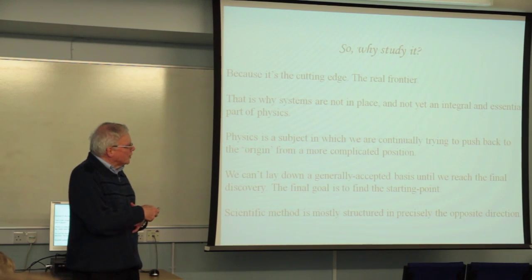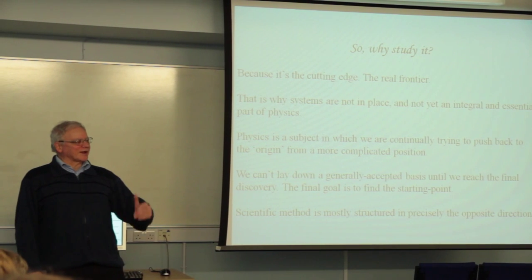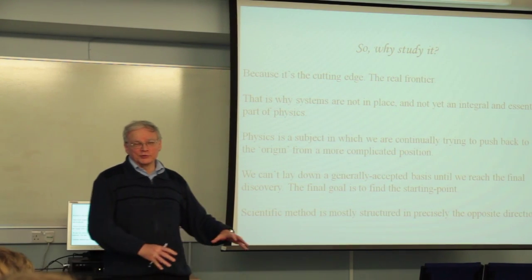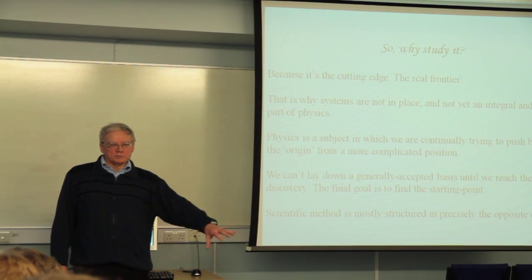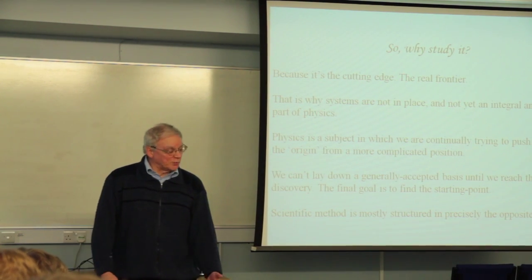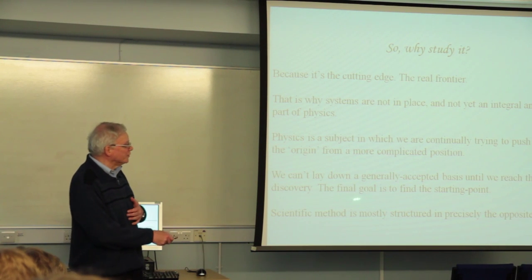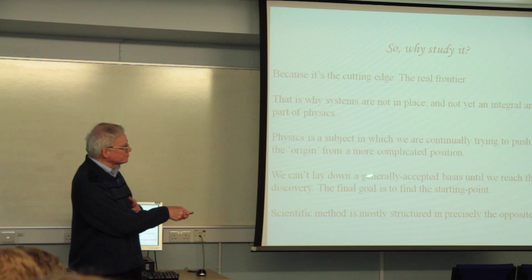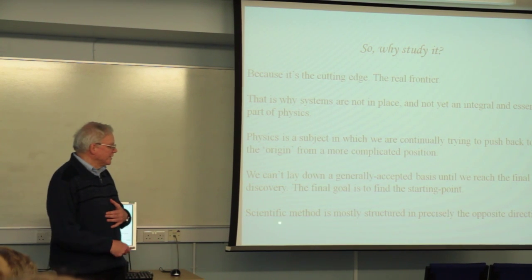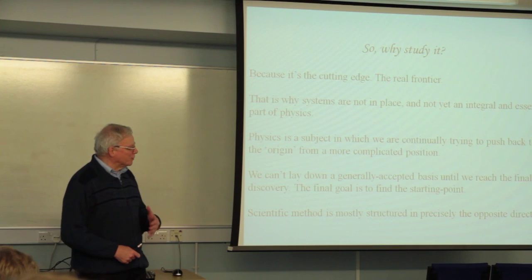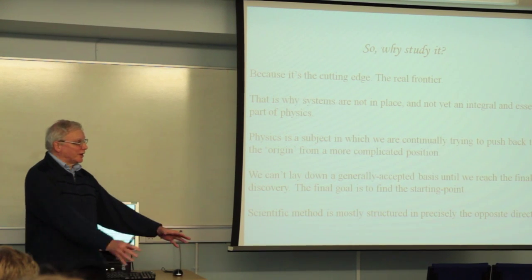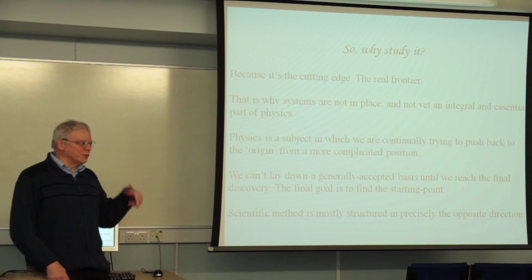The problem with it is that in physics we're always trying to push back to the origin from something more complicated. We start with a complicated world around us and try to project back to what might possibly be some sort of initial conditions, some initial beginning. So we haven't got any basis on which we can start, because we're trying to find the basis. Until we actually reach something more final, we've got no basis, because the final is the starting point. Scientific method is mostly structured in the opposite direction — we have starting points like Maxwell's equations or quantum mechanics, and we start by building and explaining various things using them. But we can't do that in this case; we've got to try and work the other way.